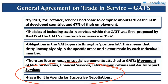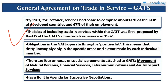Under GATS, four sectors are of prime importance: movement of natural persons, financial services, telecommunications, and air transport. One important thing to note is that this agreement has a built-in agenda for successive negotiations — the Agreement on Agriculture also has this feature. This means all the provisions and negotiations are not fixed; they are open to further negotiations, and more provisions can be added or existing ones reduced.